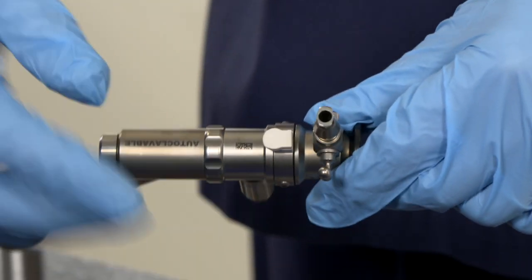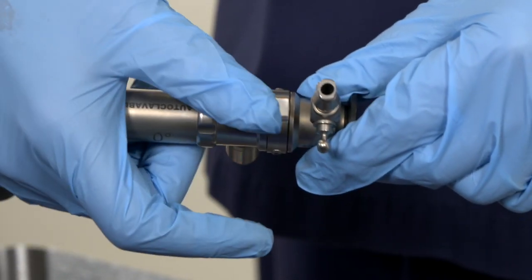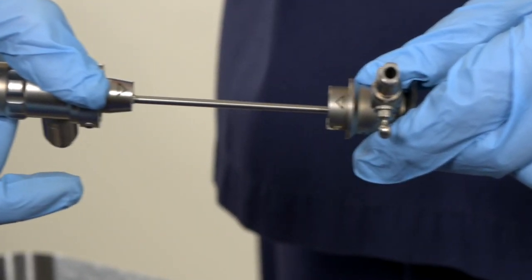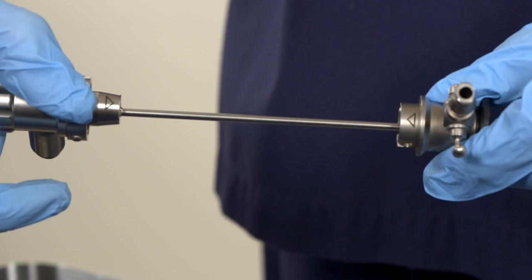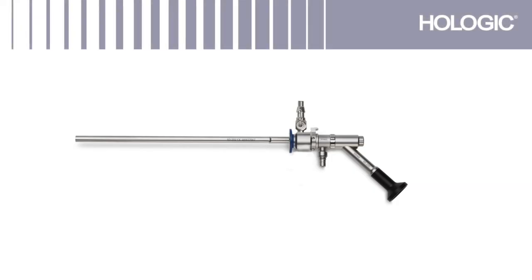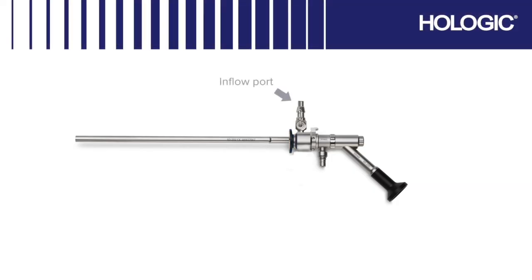To release the sheath press the white button and slide apart. Now continue with standard hysteroscopy setup. Located here is the inflow port connected to the diagnostic sheath. Connect the required light lead adapters here.